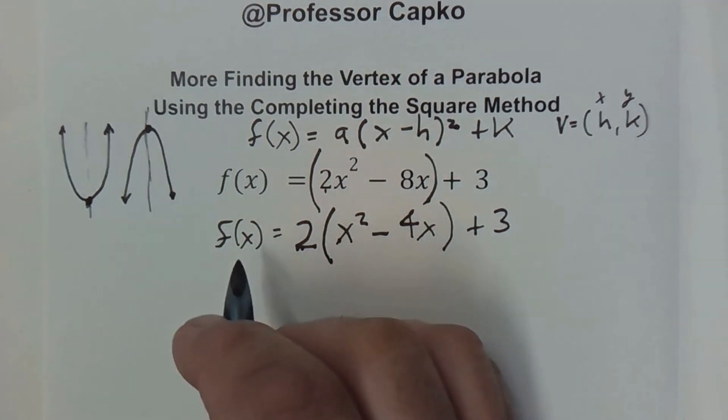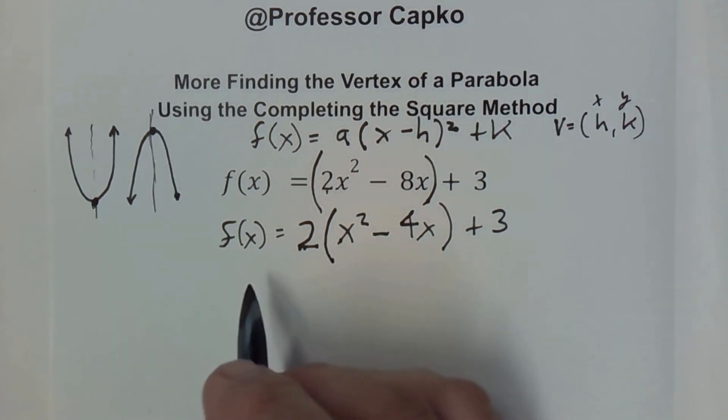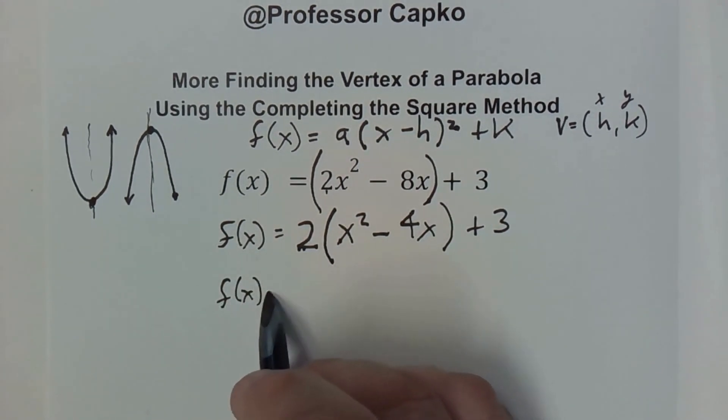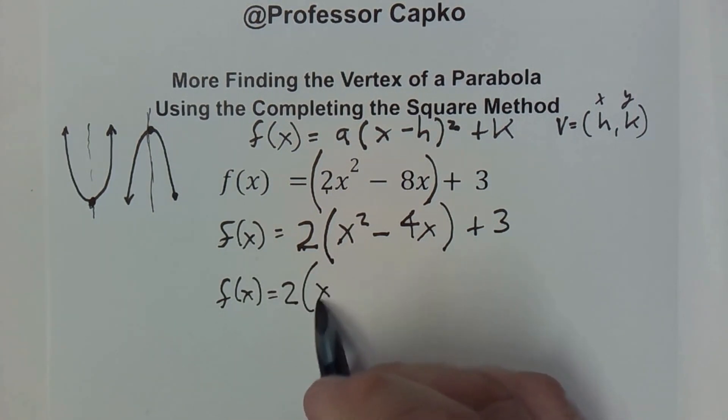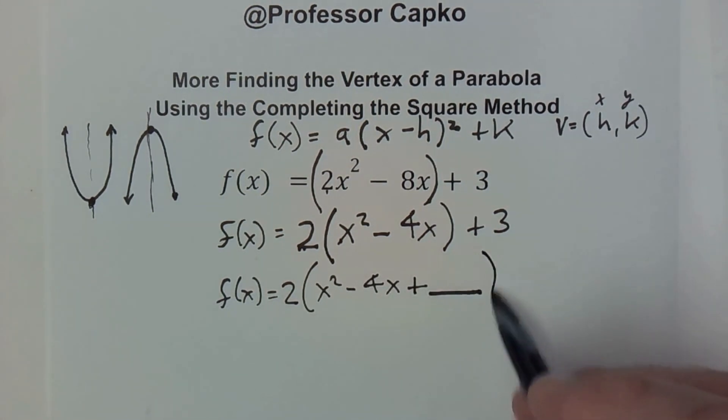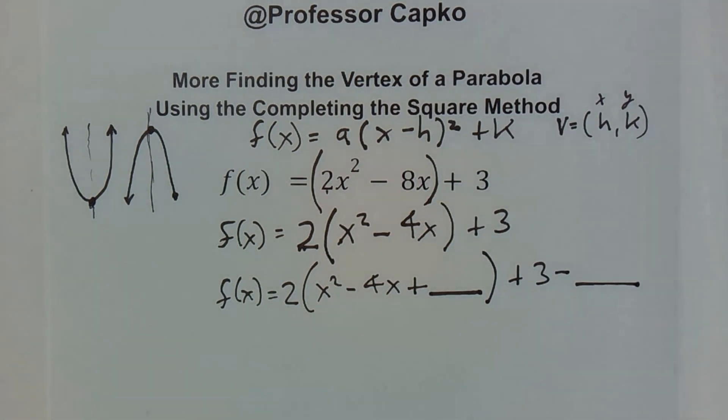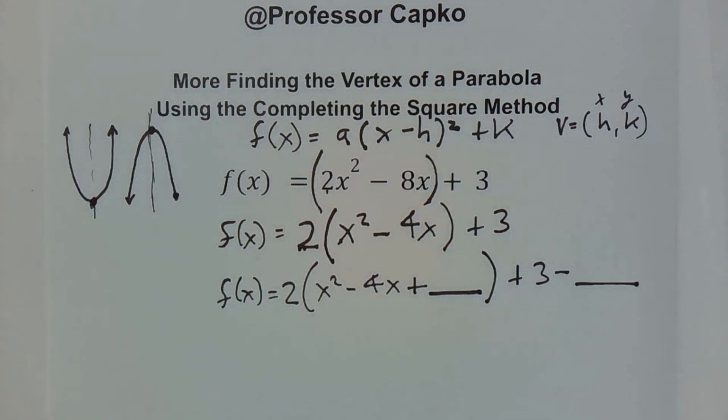Now I'm going to expand this to put an additional term in my parentheses. f of x is equal to 2 parentheses x squared minus 4x plus a line there because we don't know what we're putting in there yet, close parentheses plus 3. I'm going to subtract a number as well and that number will be balancing out this number so that it remains in balance. But there's a trick to that so stay with me because if you try and do it like we did last time it's not going to give you the right answer with this one because we have a coefficient greater than 1 in front of our x squared term.